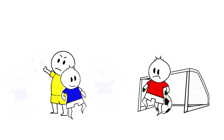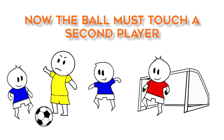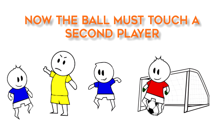The ball may not enter the goal and a goal be counted from a drop ball until the ball has touched a second player — any player — after the drop ball. The easiest way to think about this is that scoring from a drop ball is pretty similar to scoring from an indirect free kick.